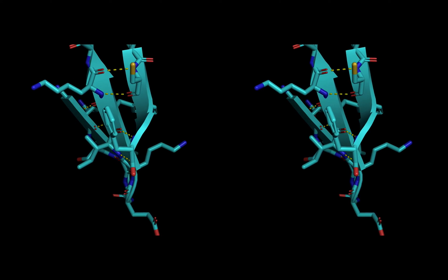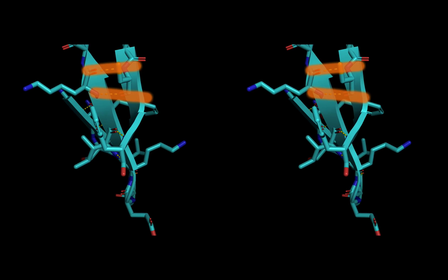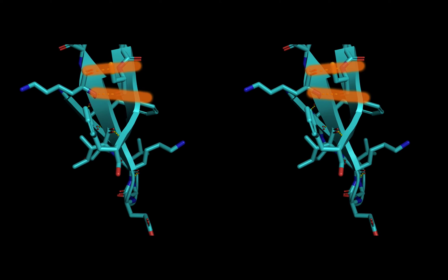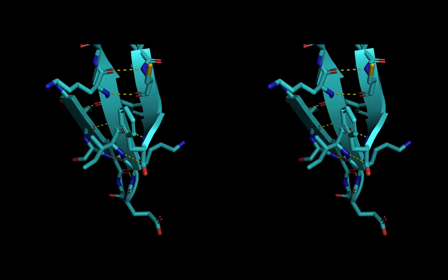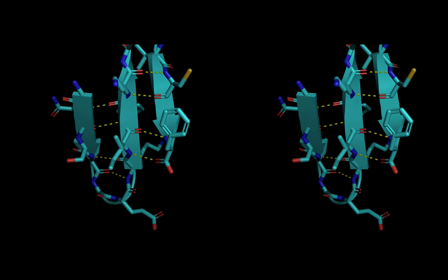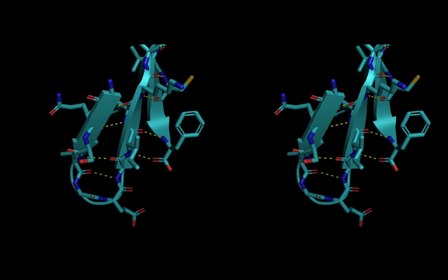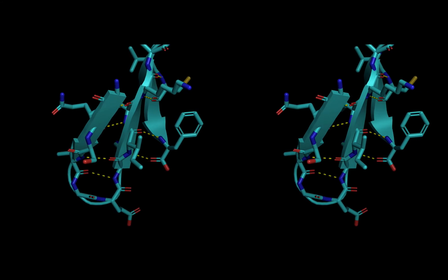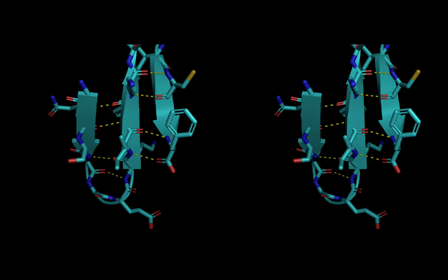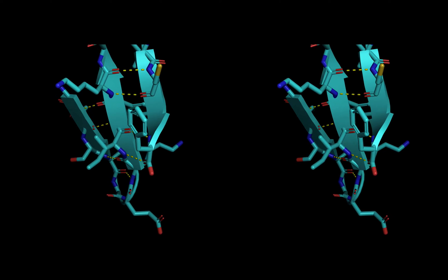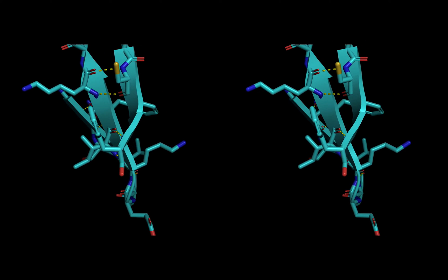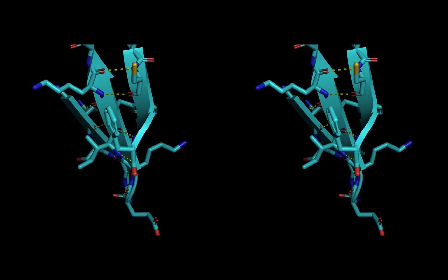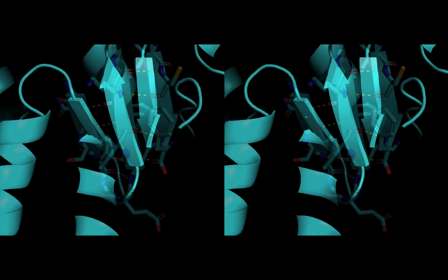Now we can add in the hydrogen bonds. I've colored these dashed lines yellow. Notice how they connect blue nitrogen atoms to red oxygen atoms. This is because the hydrogen atom is not shown for clarity. To understand this rendering, we have to know that the nitrogen is actually an NH group and that there's a hydrogen atom making the H bond to the carbonyl oxygen.